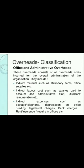Now we will read about the office or administrative overheads. These overheads consist of all overhead costs incurred for the overall administration of the organization. This includes indirect material such as stationery items and office supplies; indirect labor like salaries paid to accounting and administrative staff, directors' remuneration, etc.; and indirect expenses like telephone expenses, postage expenses, depreciation on office building, bank charges, and rent.